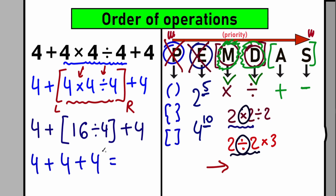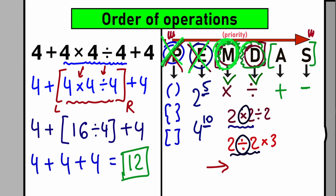So 4 plus 4 plus 4 equals 12. That is our answer. No parentheses, no exponents — we have multiplication and division, which is great; we have addition, which is great. In this horizontal perspective you can easily see which elements have higher priority.